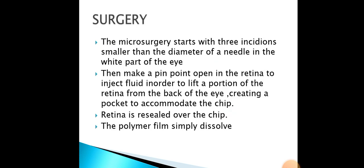Explaining the surgery: the microsurgery starts with three incisions smaller than the diameter of a needle in the white part of the eye. Then a pinpoint opening is made in the retina to inject fluid in order to lift a portion of the retina from the back of the eye, creating air pockets to accommodate the tip. The retina is then resealed over the tip, and the polymer film simply dissolves.